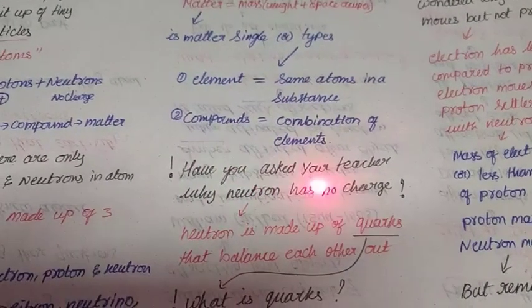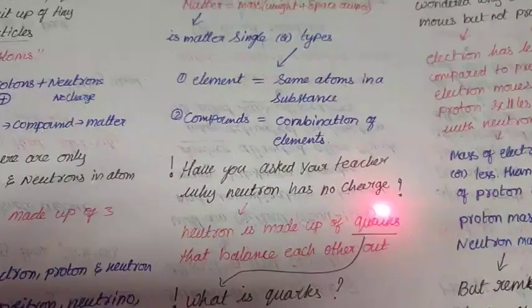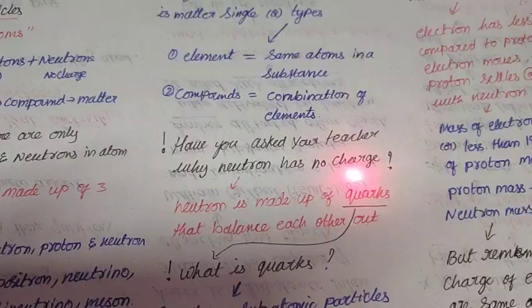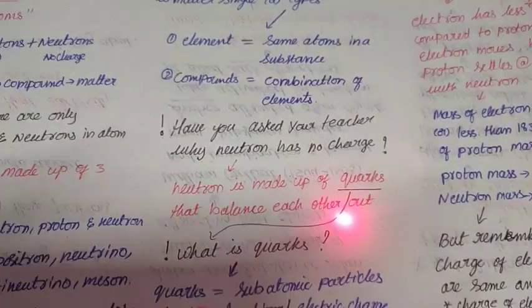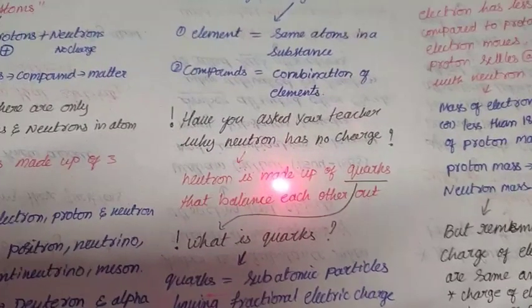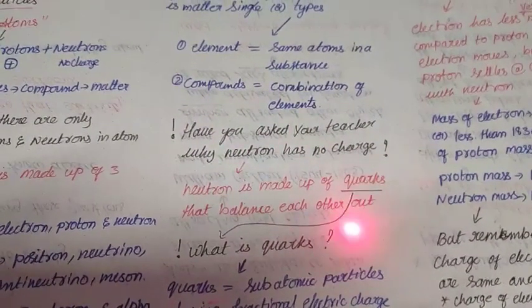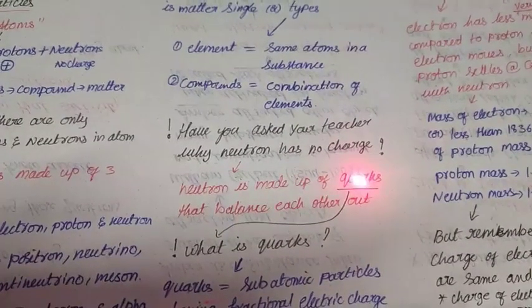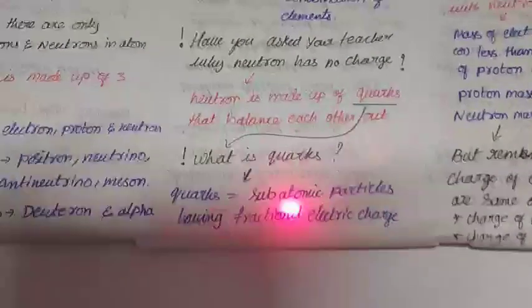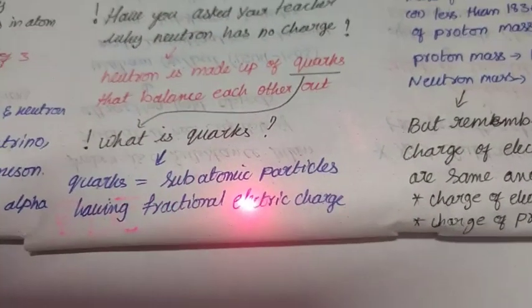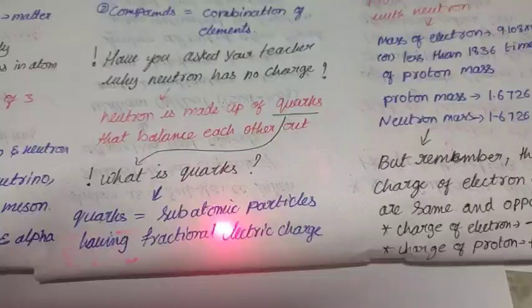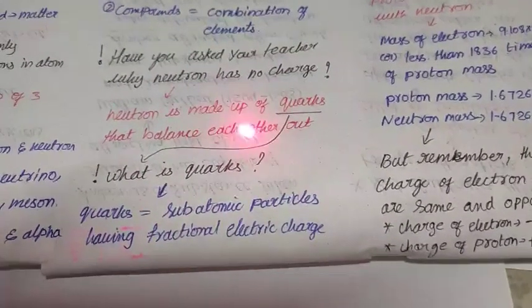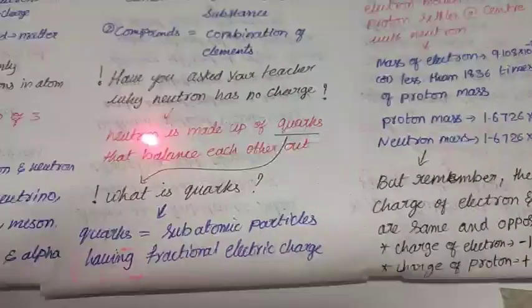Have you asked your teacher why neutron has no charge? If not, let's see. Neutron is made up of quarks that balance each other. So by balancing each other, the net charge of the neutron will be zero. So here again, the previous question was solved, but you have a new question: what is quarks? Quarks is a subatomic particle having fractional electric charge. So minimum or less electric charge particles called quarks. These all particles are balanced with each other, so neutron has no charge.